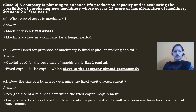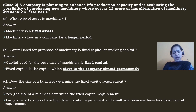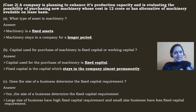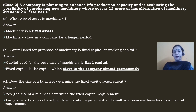Capital used for the purchase of machinery is fixed capital. When we buy a car or a bike, we use fixed capital. Similarly, capital used to purchase machinery is fixed capital — it is the capital which stays in the company almost permanently.